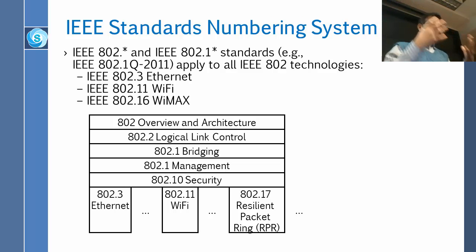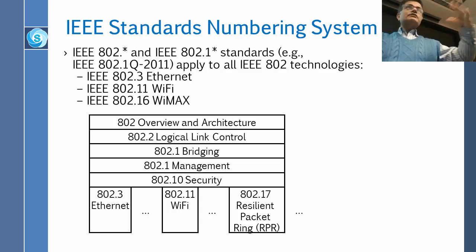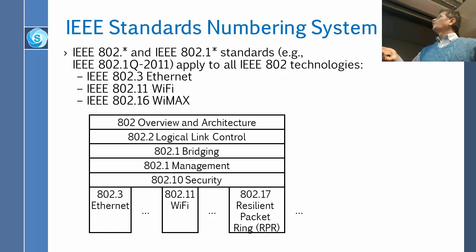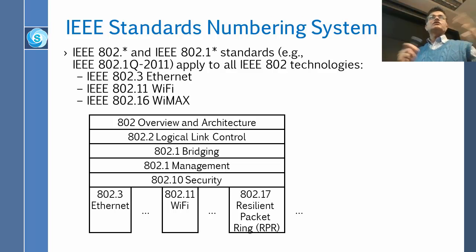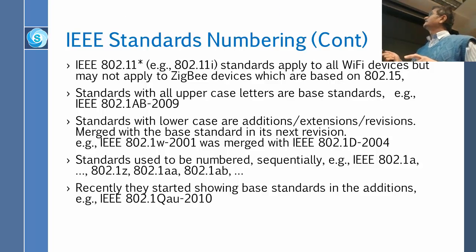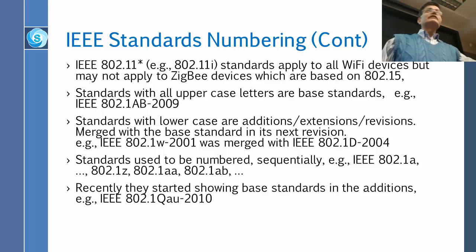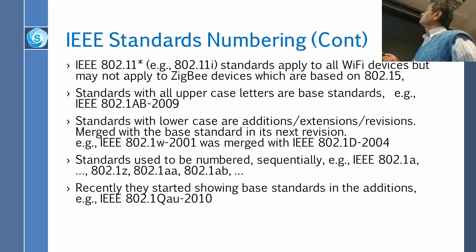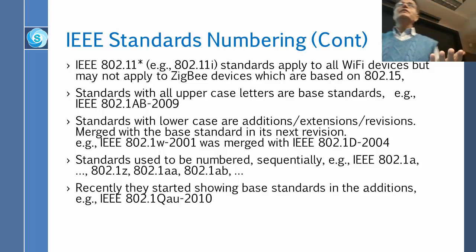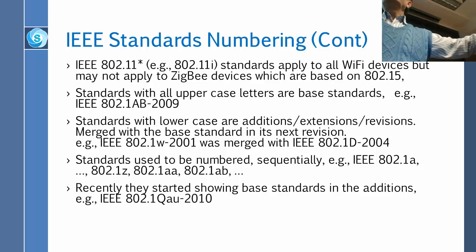Within 802.11 there are many subgroups. In the marketplace we say Ethernet; in IEEE it is 802.3. Wi-Fi is 802.11, WiMAX is 802.16, and so on. There is generally a letter after these numbers — for example, 802.11i means the i-th subgroup in 802.11. That subgroup's standard applies to all 802.11 devices, but not to other 802 standards like 802.15. 802.15 is Zigbee and follows its own rules, independent of 802.11.